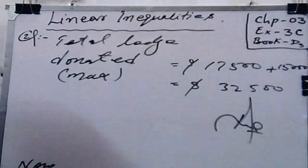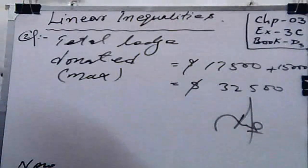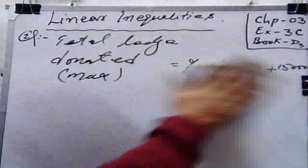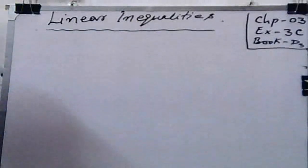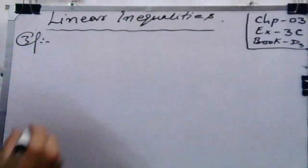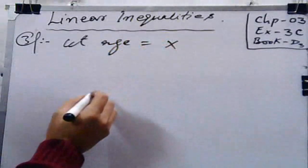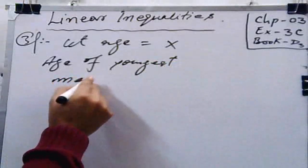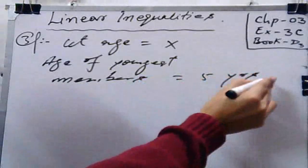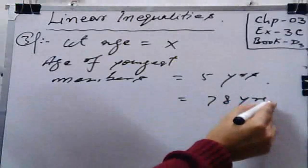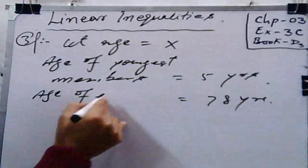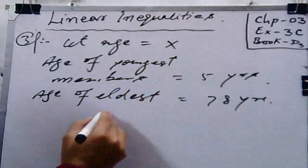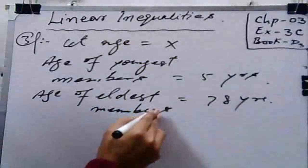In question number 3, read the statement: The youngest member of the extended Lim family is 5 years old and the eldest is 78. What are the possible ages of the other members of the Lim family? Let the age be x years. Age of youngest member is equal to 5 years, and 78 years is the age of eldest member.